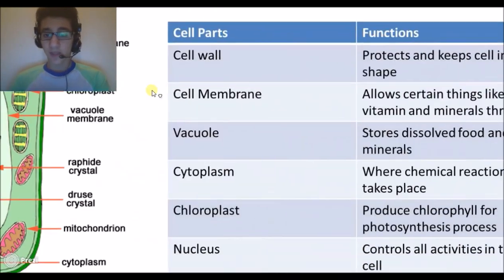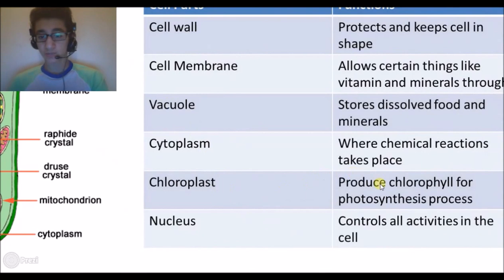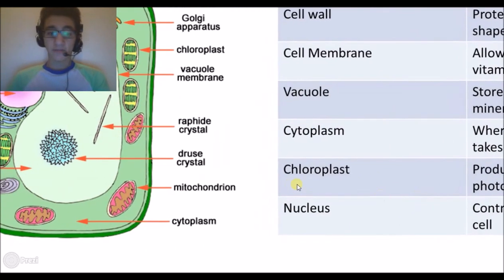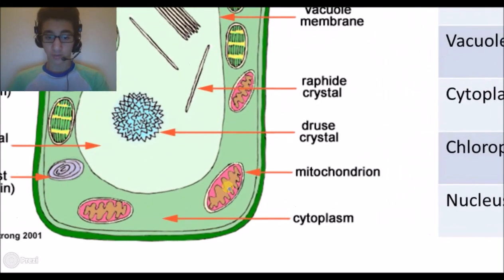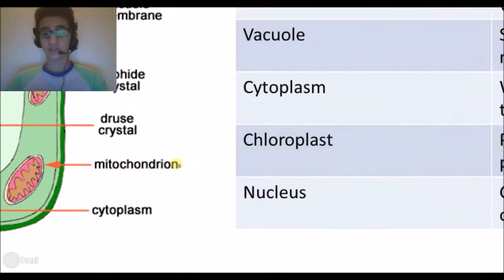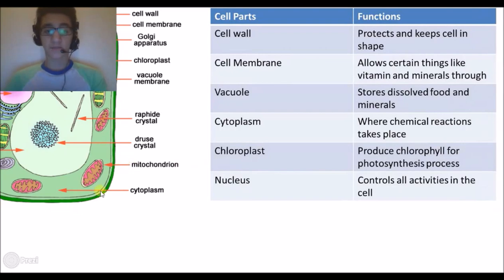There is also the chloroplast which produces chlorophyll for photosynthesis process. The chloroplast is located right here and that's where photosynthesis happens.